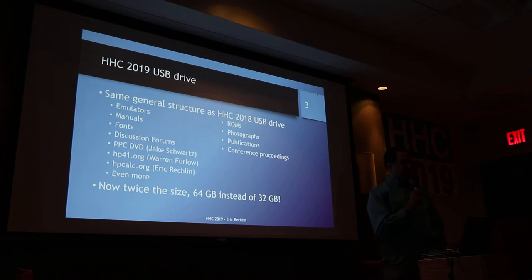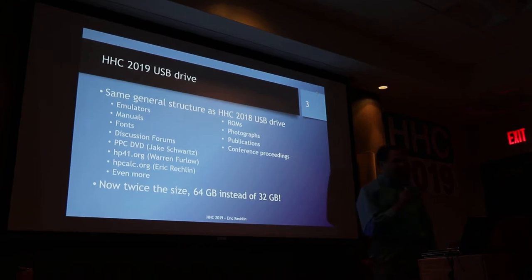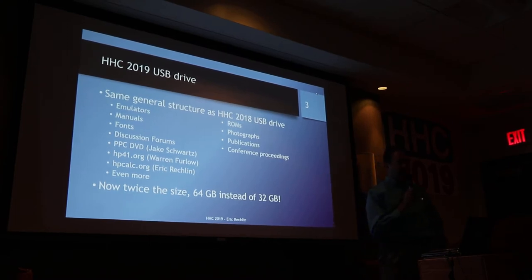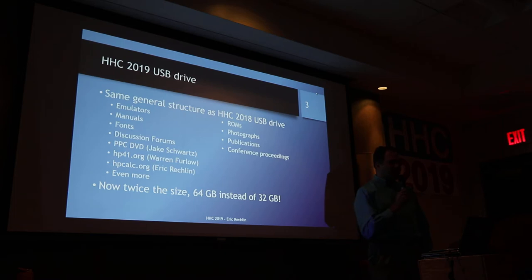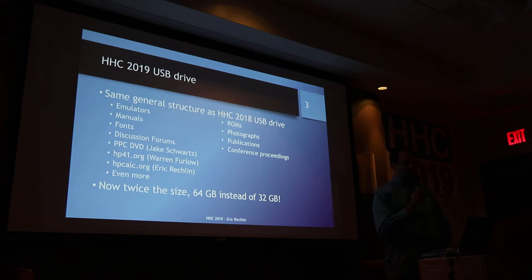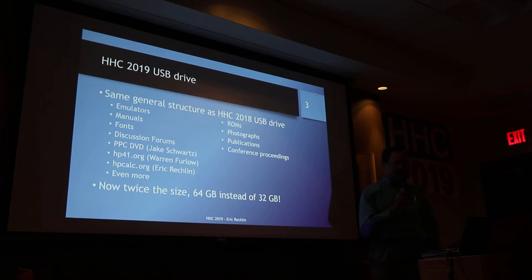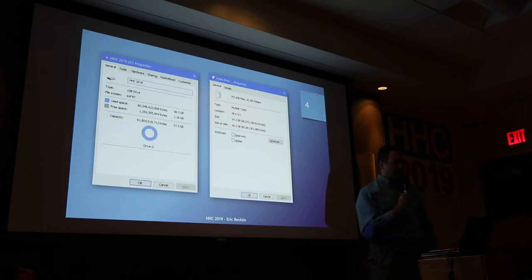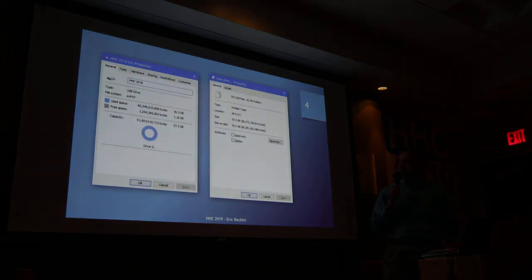The HHC 2019 USB drive, which every one of you received with your packets — I gave a talk on it last year and it is very similar to last year's drive, except it's now twice the size: 64 gigabytes instead of 32. It has all the same categories: emulators, ROMs, manuals, photographs, fonts, publications, discussion forum archives, all the conference proceedings going back about 20 years, Jake Schwartz's PPC DVD, Warren Furlow's hp41.org archive, and my website, and quite a lot more. It's over three quarters of a million files, over 60 billion bytes, 56 gigabytes, with just a little over a gigabyte free.